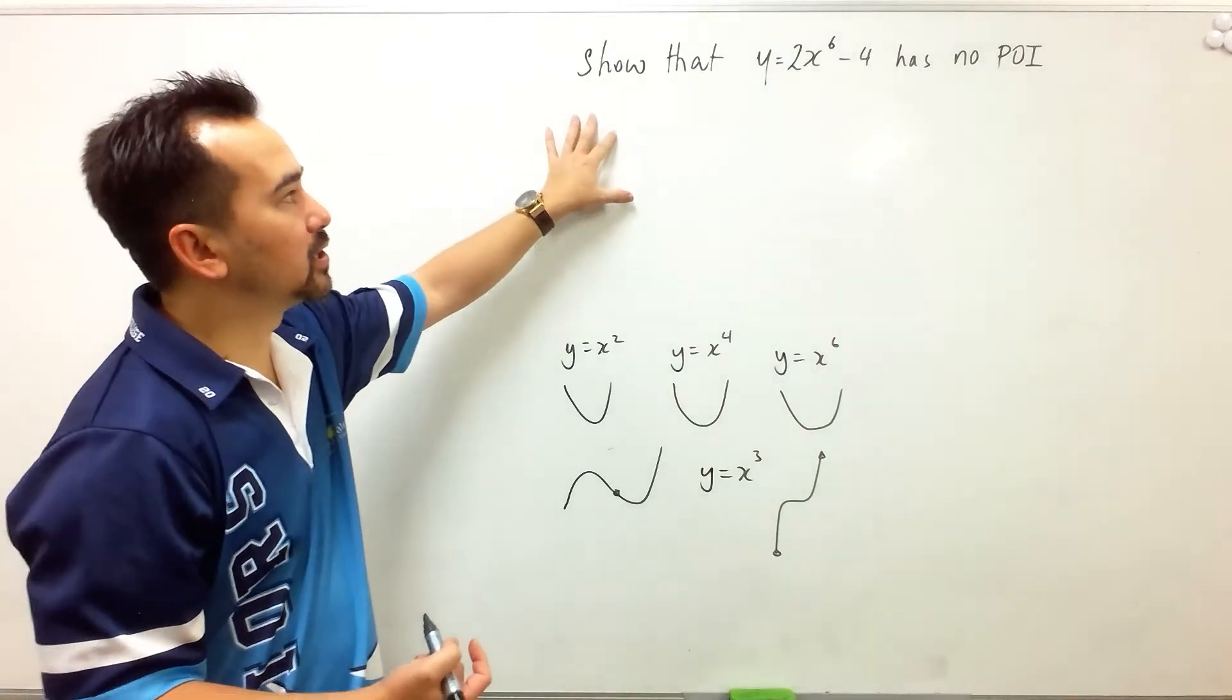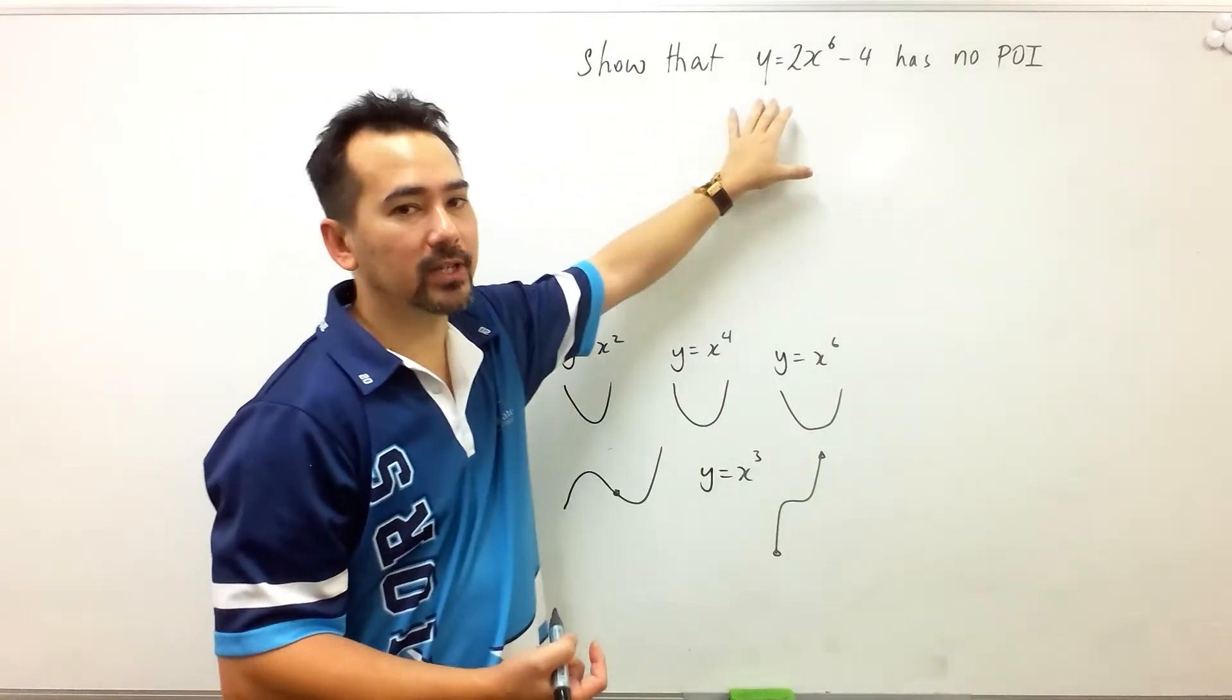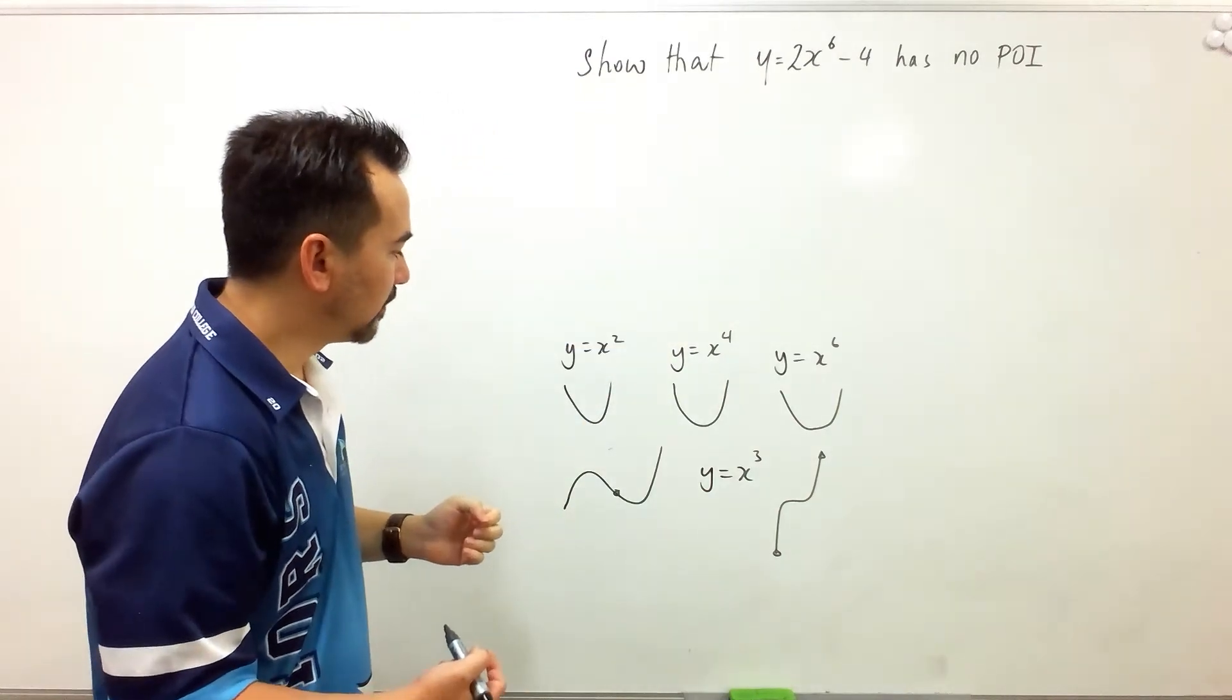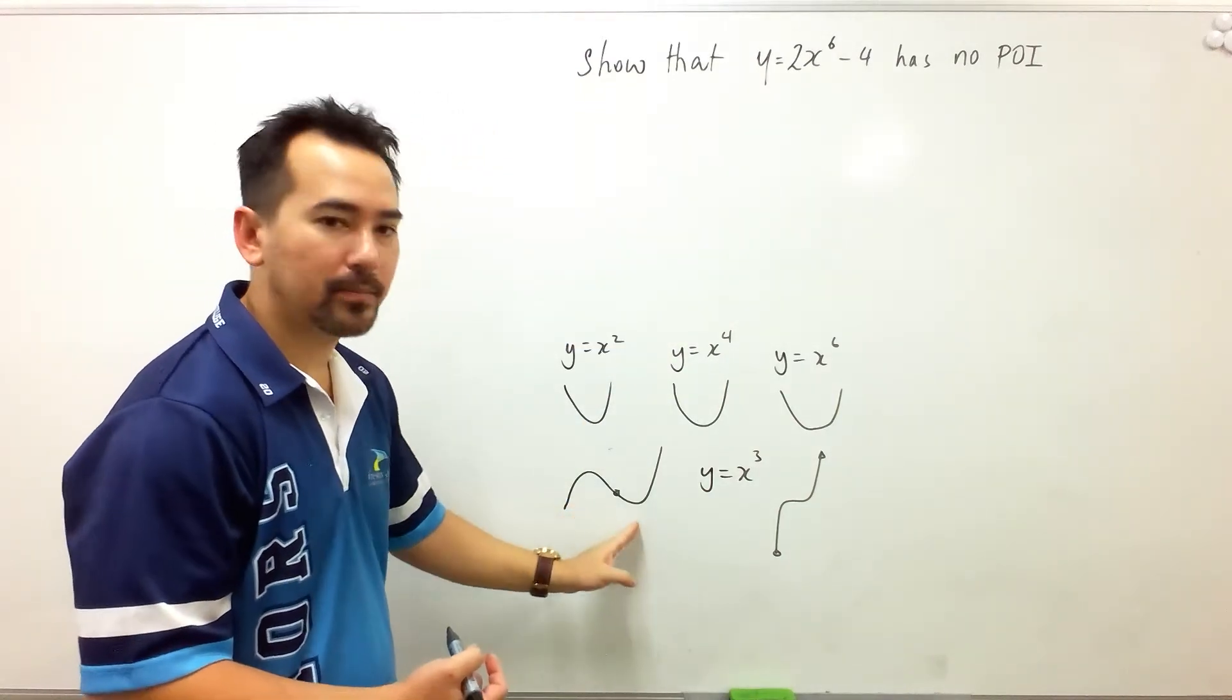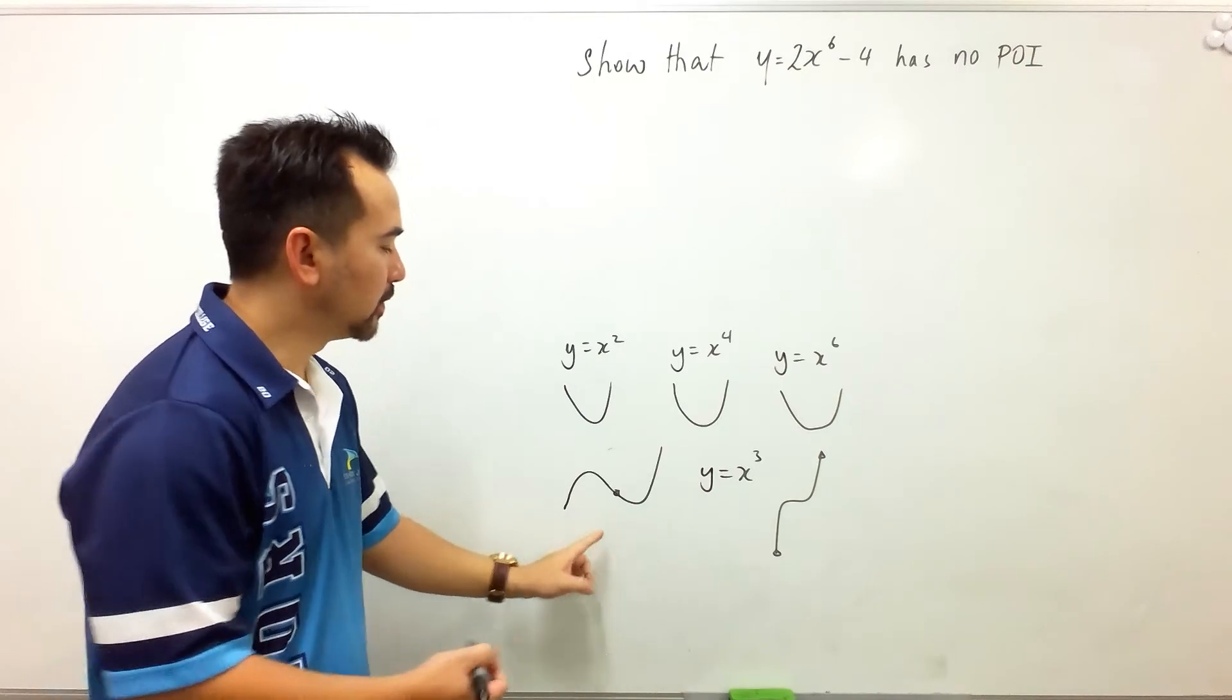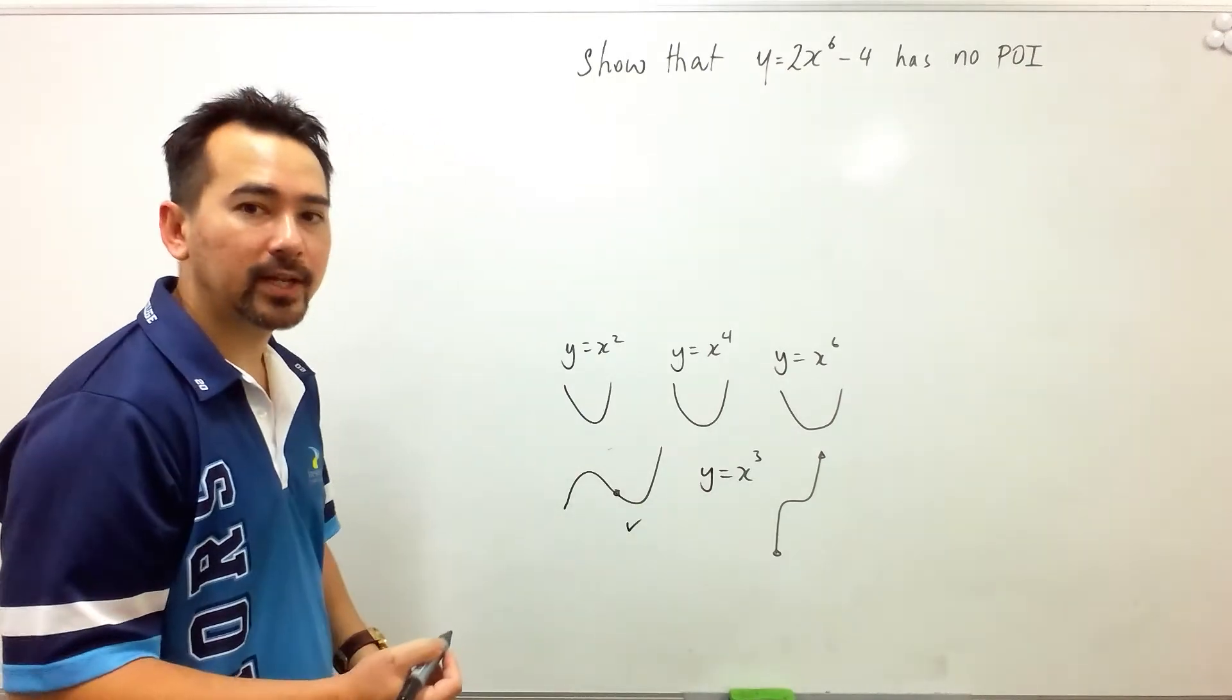So if we're going to show that this function has no point of inflection, we need to show that we do not have opposite concavity like we do here. Right, let's give this a go.